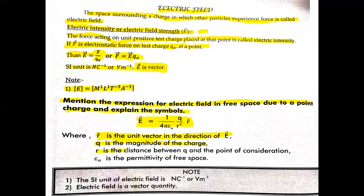r is the distance between q and the point of consideration. ε₀ is the permittivity of free space — that is its value, which you can use in the problems section.